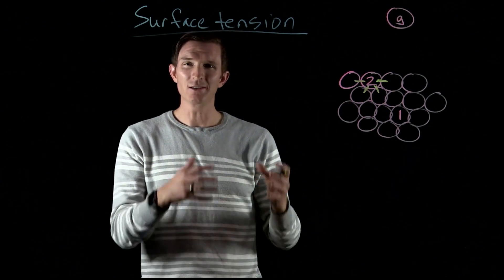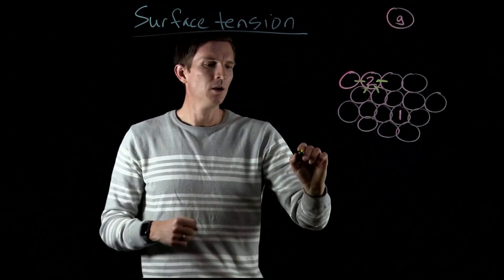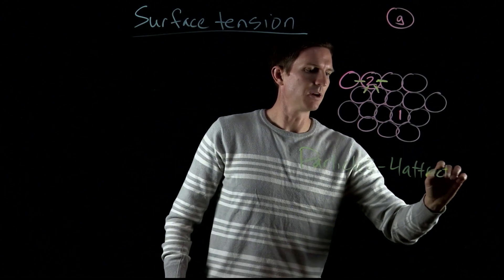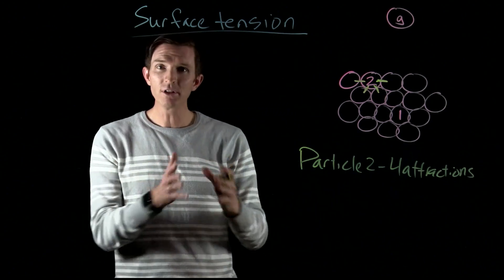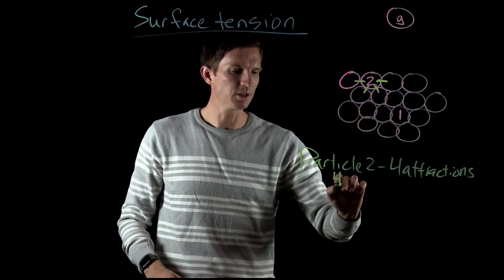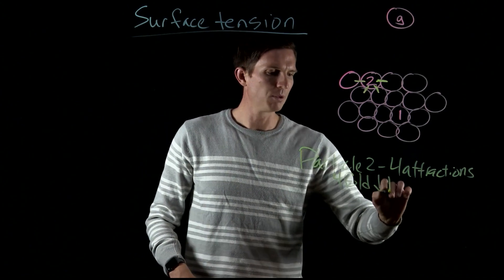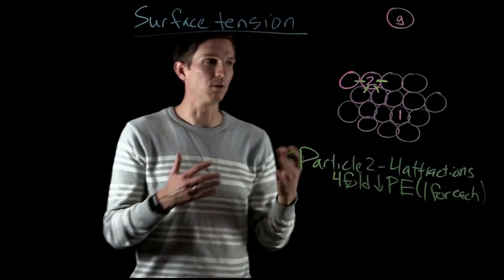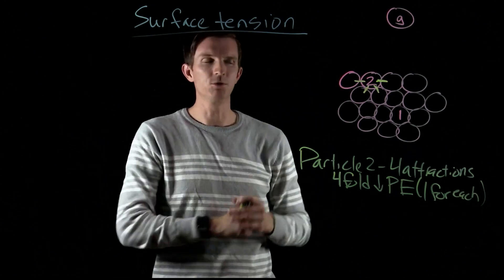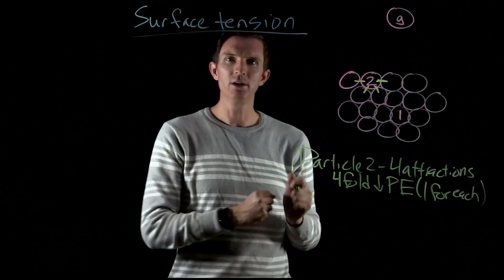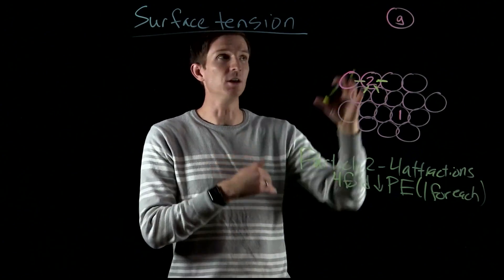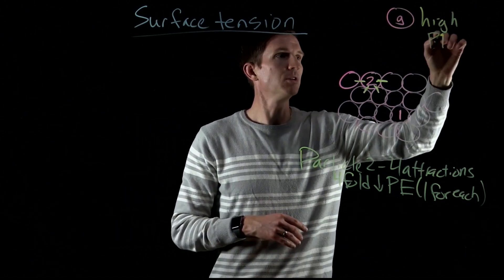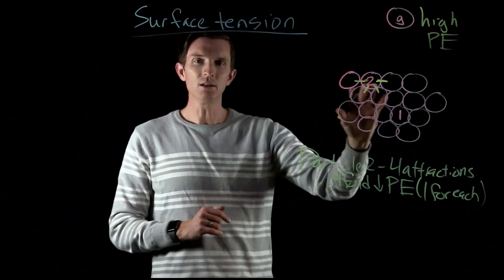Going back to the idea of attractions and how that relates to potential energy, we see that for particle two, it has four attractions that are formed. Every single attraction is going to have some amount of decrease in potential energy — a fourfold drop in potential energy, one for each attraction formed. So molecule two has a lower potential energy than our gas molecule, which has high potential energy because there are no attractions.